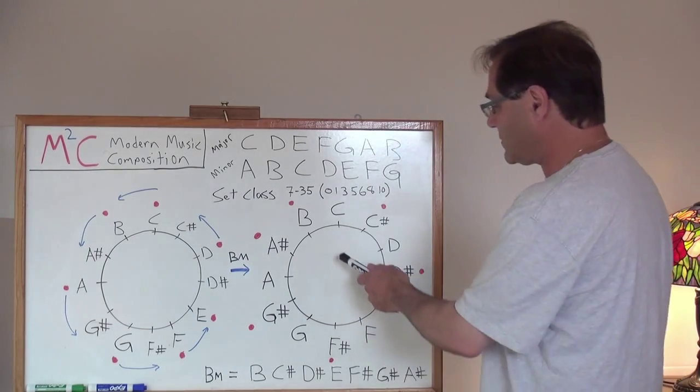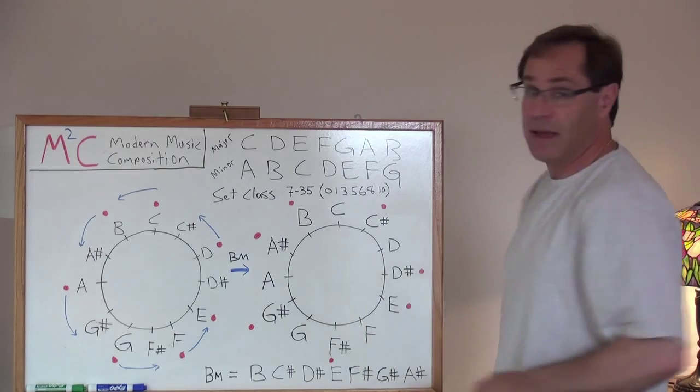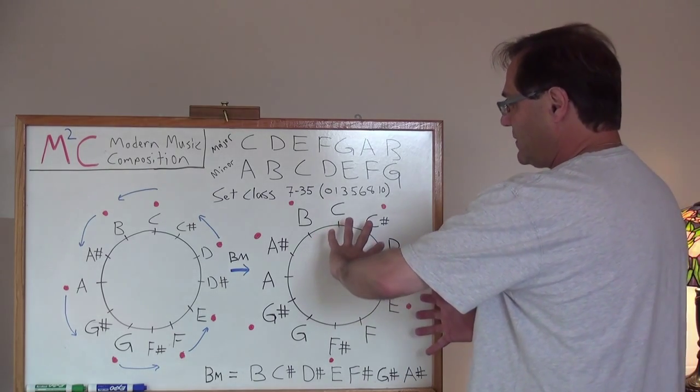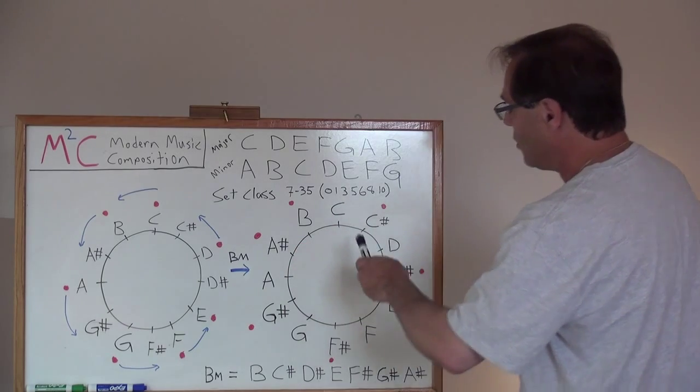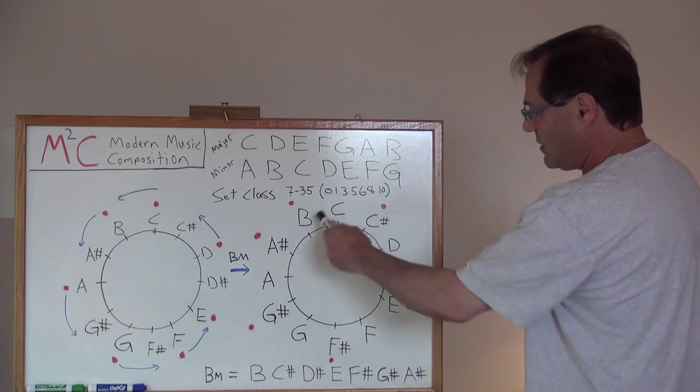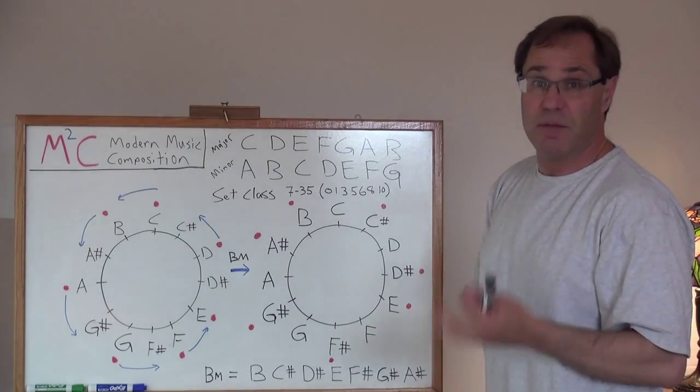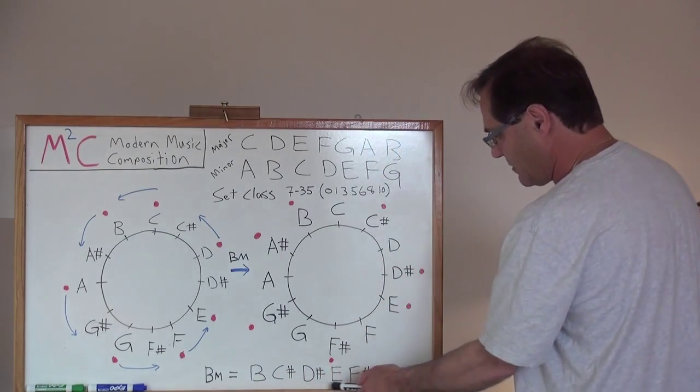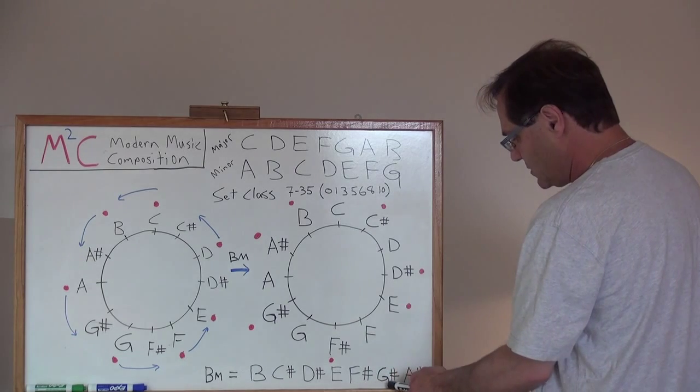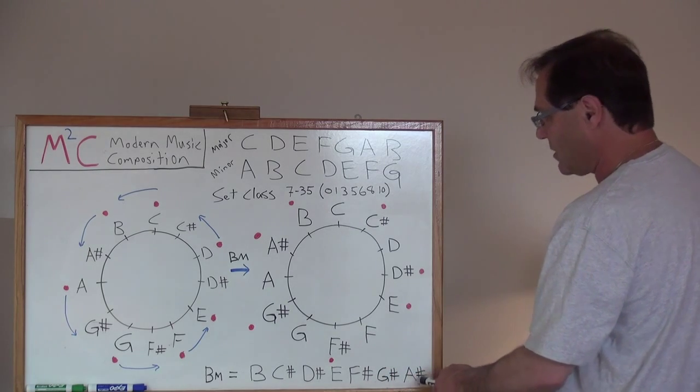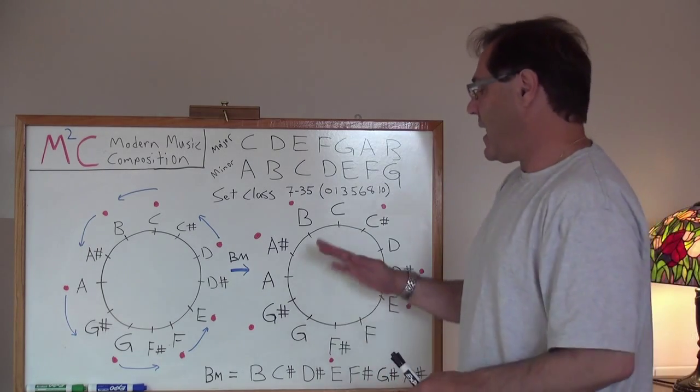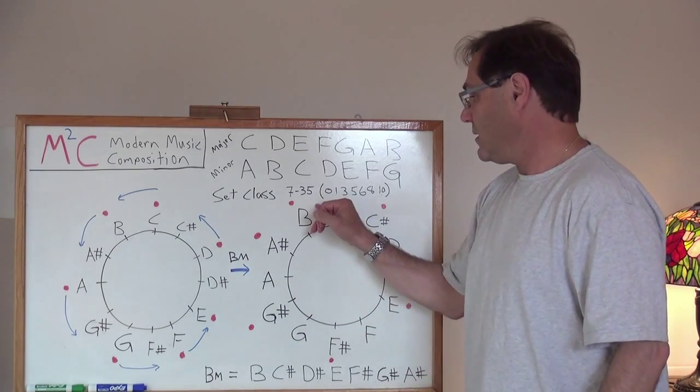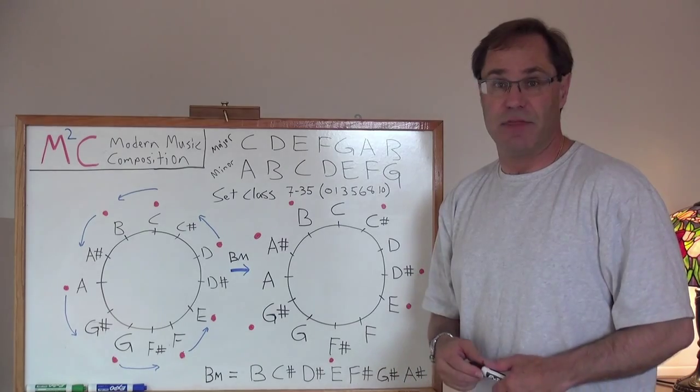And what this represents actually is the B major scale. By rotating our set class 735 one semitone counterclockwise, we've now created the seven tones of the B major scale. And I've written that out here: B, C sharp, D sharp, E, F sharp, G sharp, A sharp. And we've preserved the set class 735.